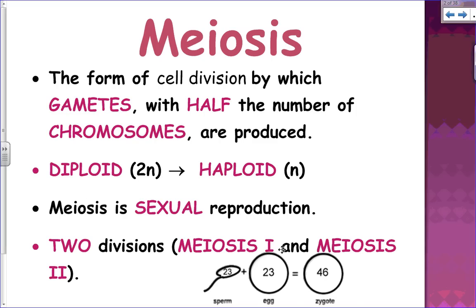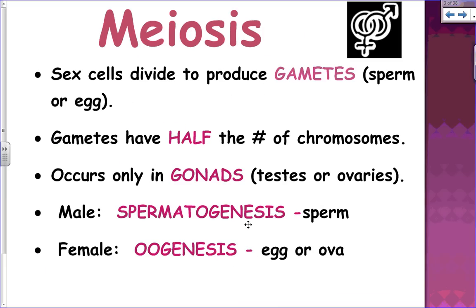Meiosis has two divisions: meiosis one and meiosis two. In meiosis, sex cells divide to produce gametes — those gametes are sperm or egg. The gametes have half the number of chromosomes. They occur in specialized sex cells called gonads — testes in men and ovaries in females.